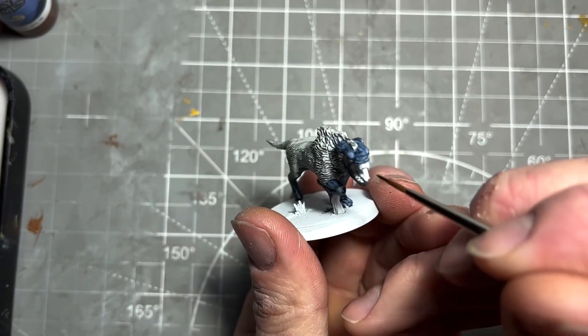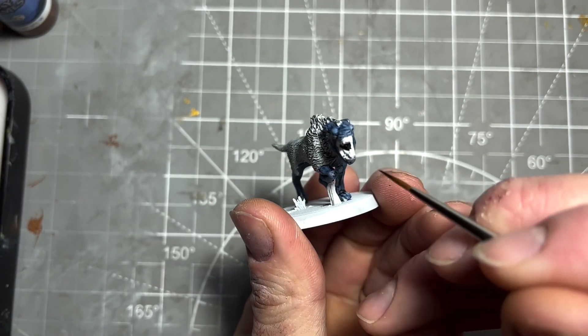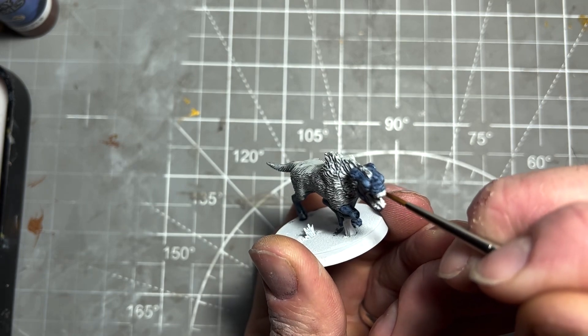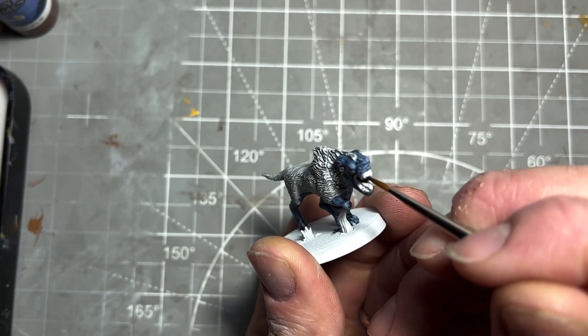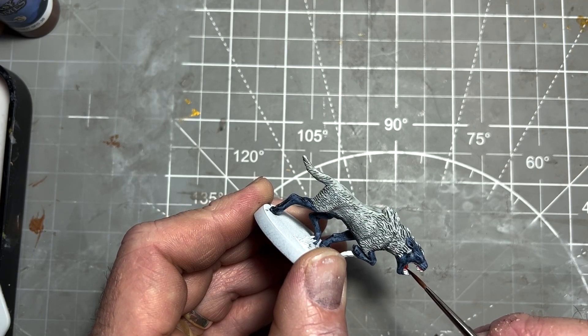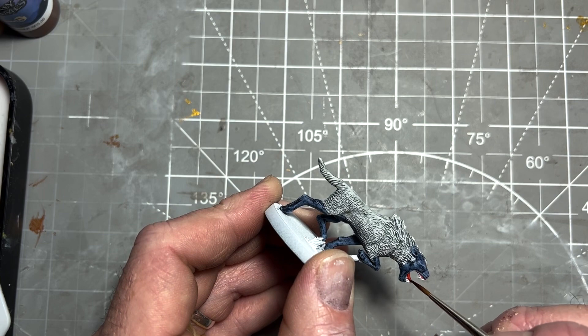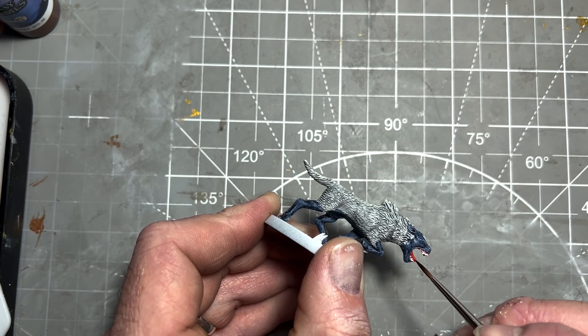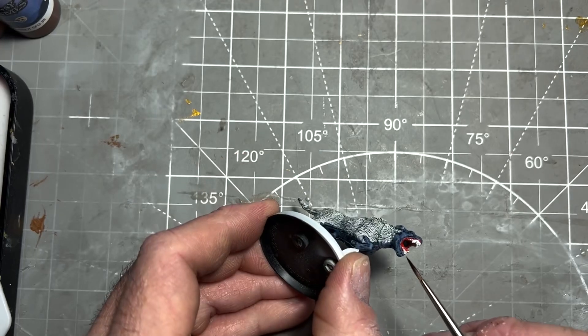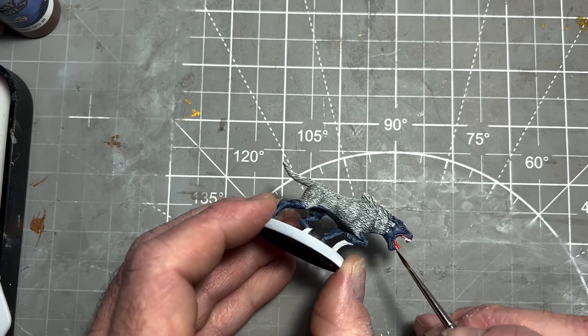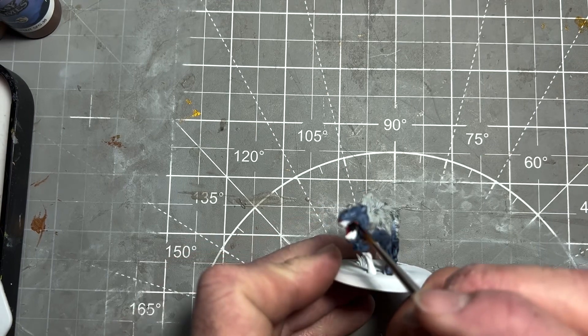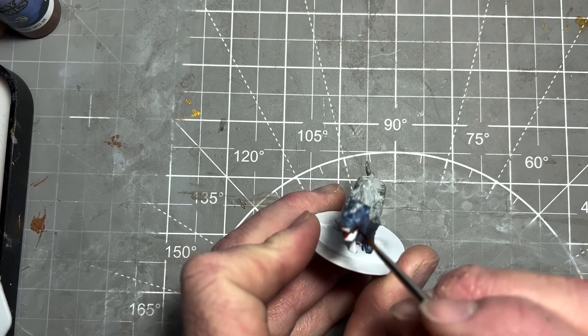Next, we'll move on to the mouth. Take some Decayed Black and paint a black circle at the back of the mouth to represent the throat. Once that's dry, take Blood Red Army Painter Speed Paint and go all around the inner mouth—the gums, tongue, and roof—avoiding the teeth. If you do get some on the teeth, it's not a problem, as we'll touch them up white later.